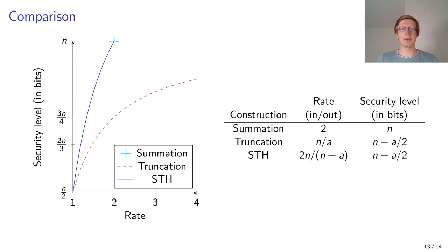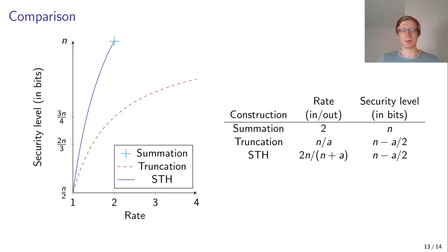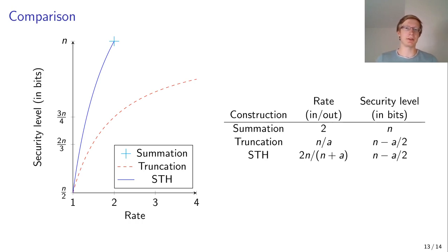Now I want to compare the summation-truncation hybrid to the summation and truncation. On the left, we have a graph with security plotted against efficiency. Security is denoted in bits, ranging from n over 2, which applies for the normal birthday bound, up to full security n. Efficiency is denoted in the rate — the number of input bits needed per output bit on average. The lower the rate, the more efficient the construction. When we first look at summation, it has full security of n bits and its rate is 2, because we need two calls to the PRP to get one block of output.